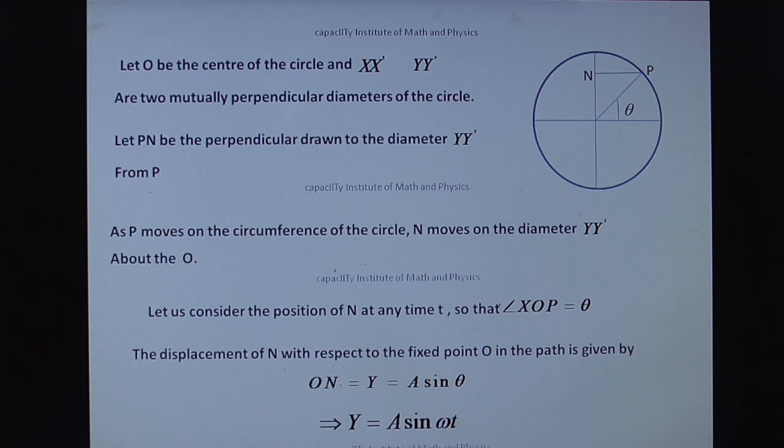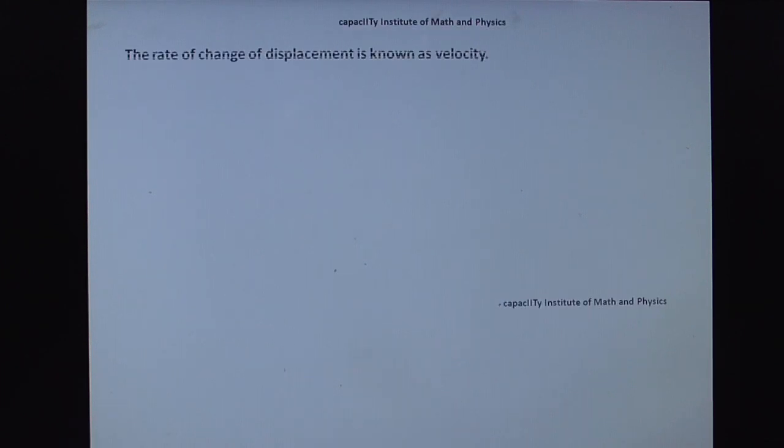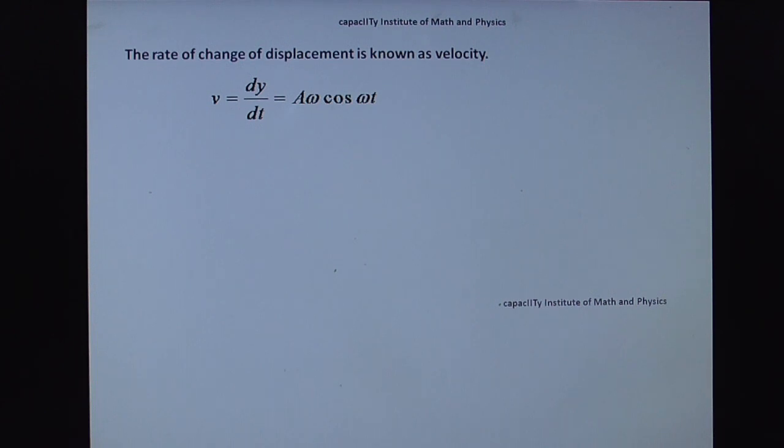So we got displacement. Finally, we have to write expression for acceleration. So therefore, observe the next steps. The rate of change of displacement is known as velocity. So that is differentiation of Y. That is, dy by dt is equal to A, sine omega T differentiation is cos omega T. Omega T differentiation is omega.